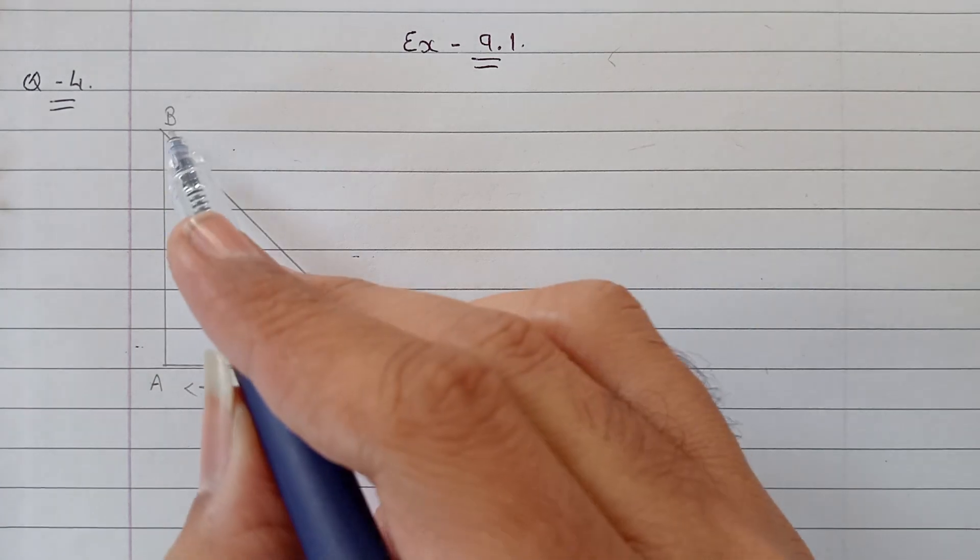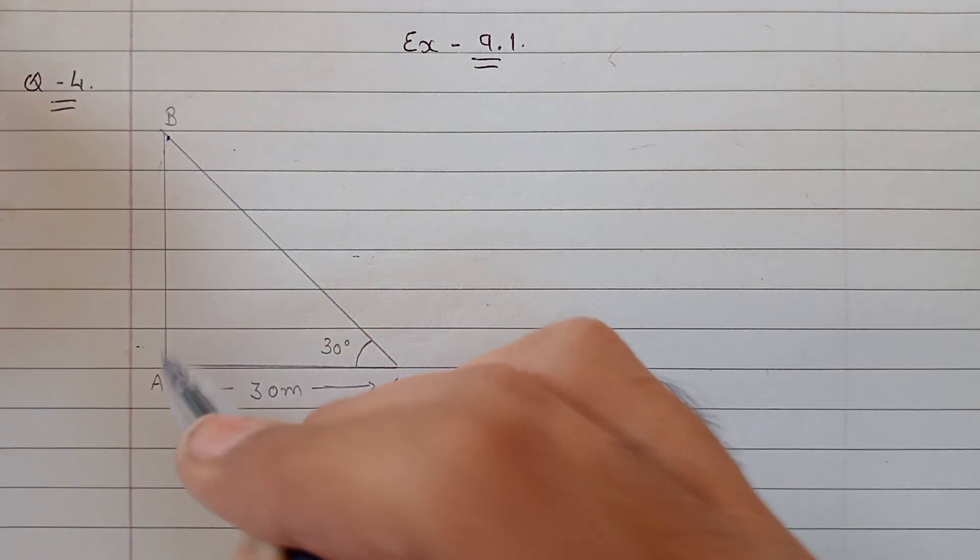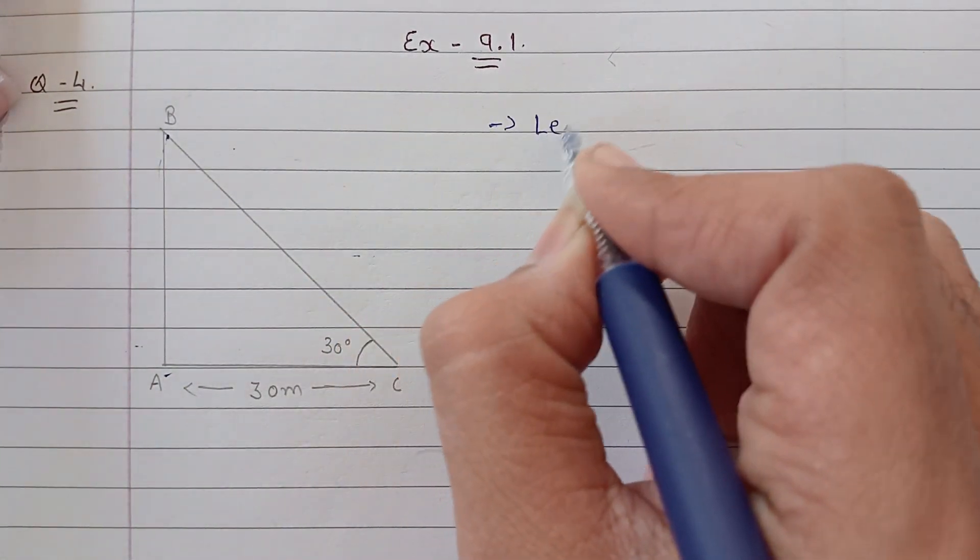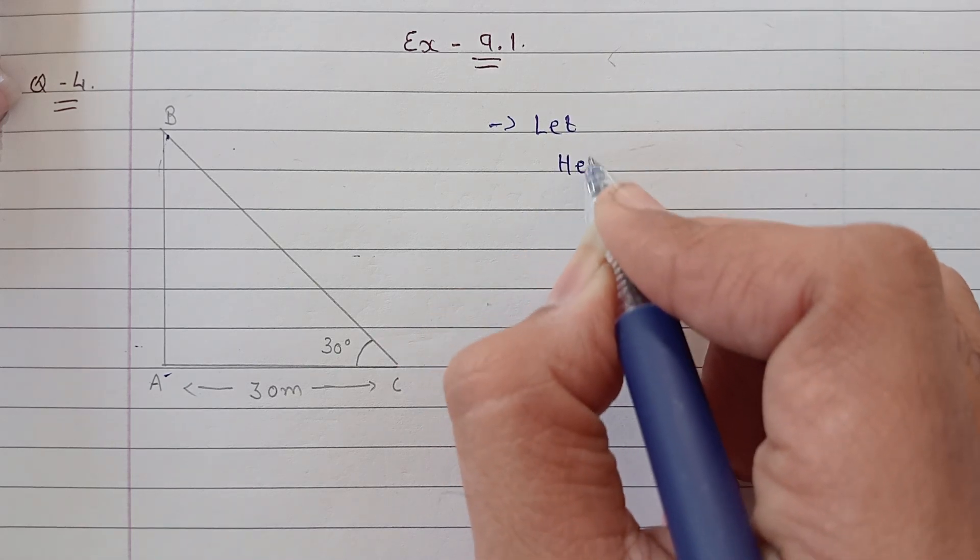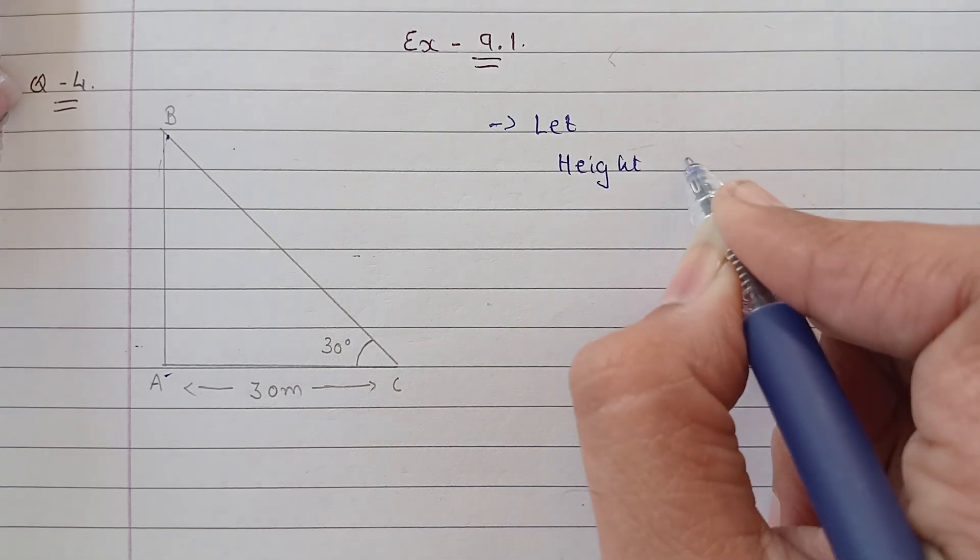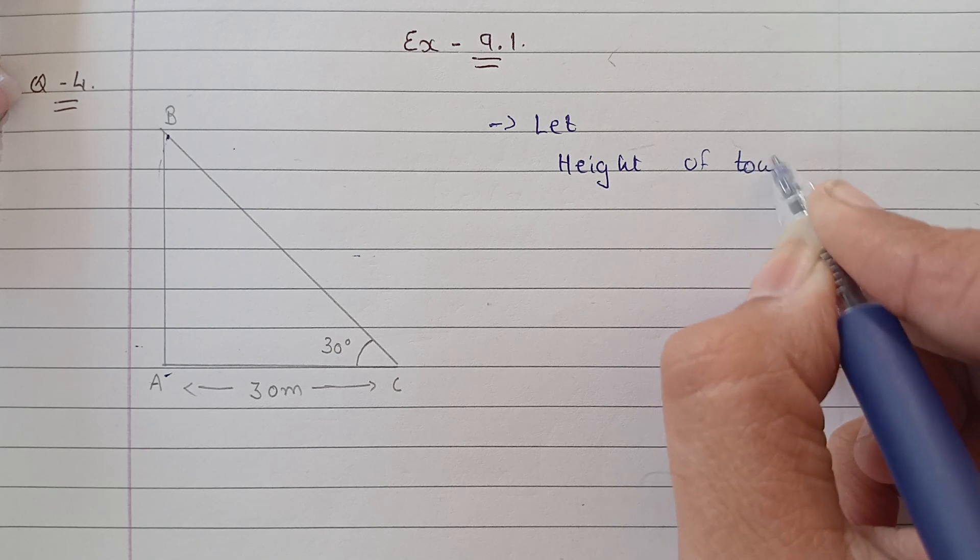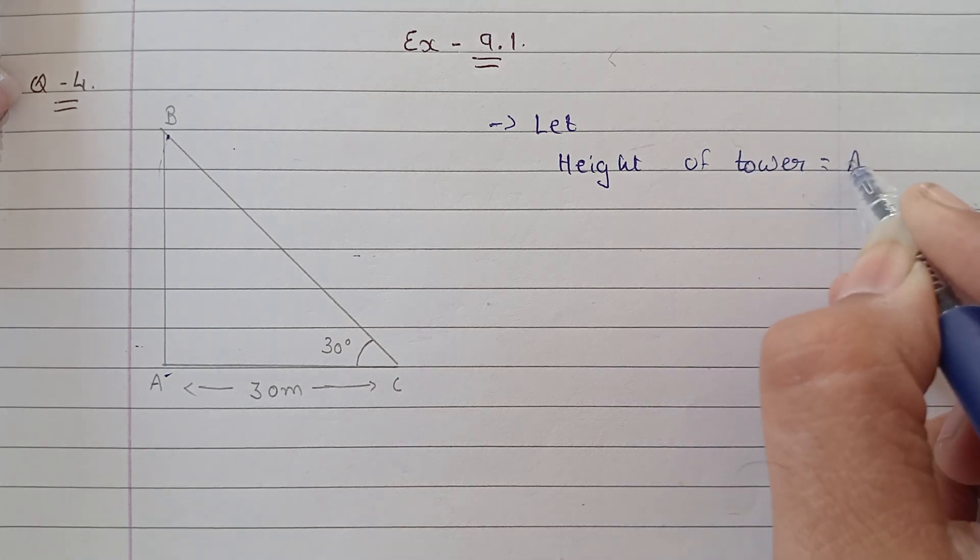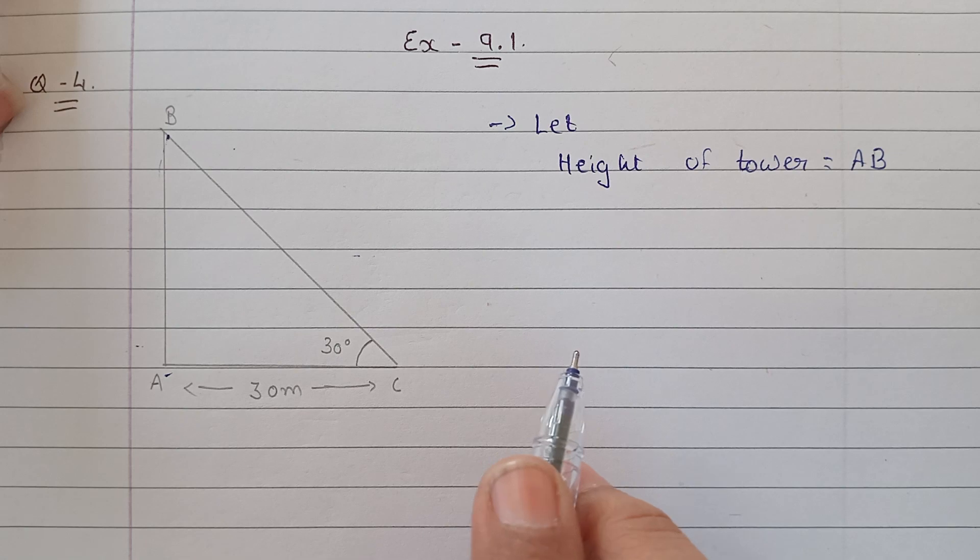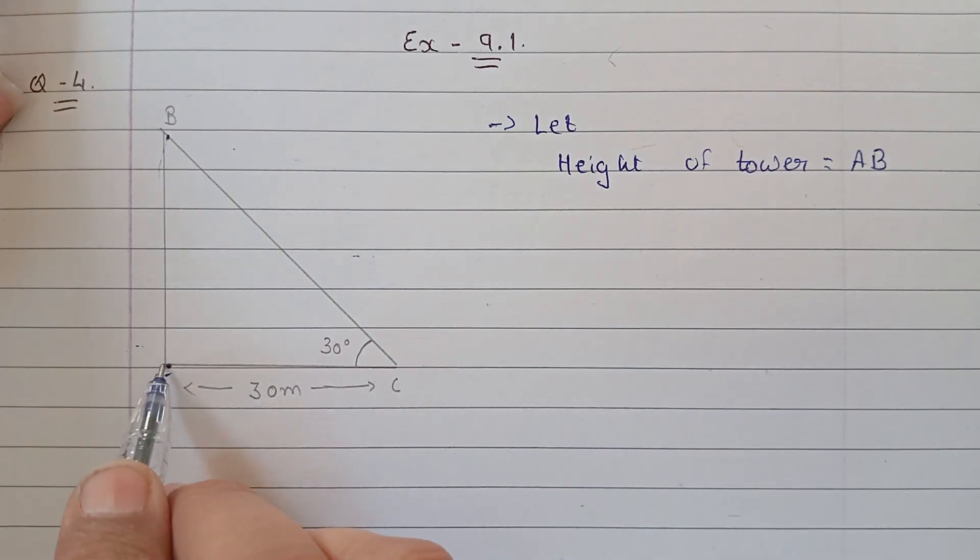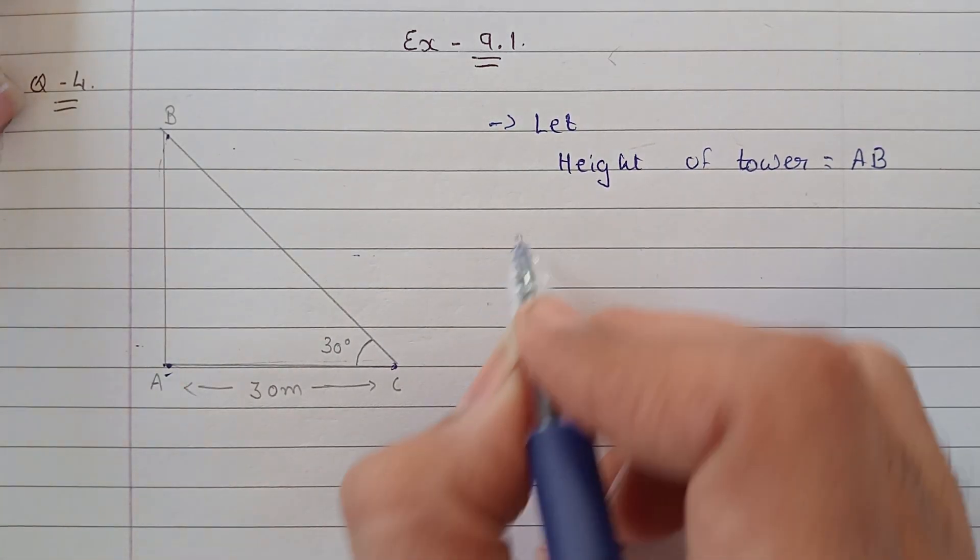What we have given over here is a tower whose height is represented by AB. Then there is a point 30 meters away, that is C.